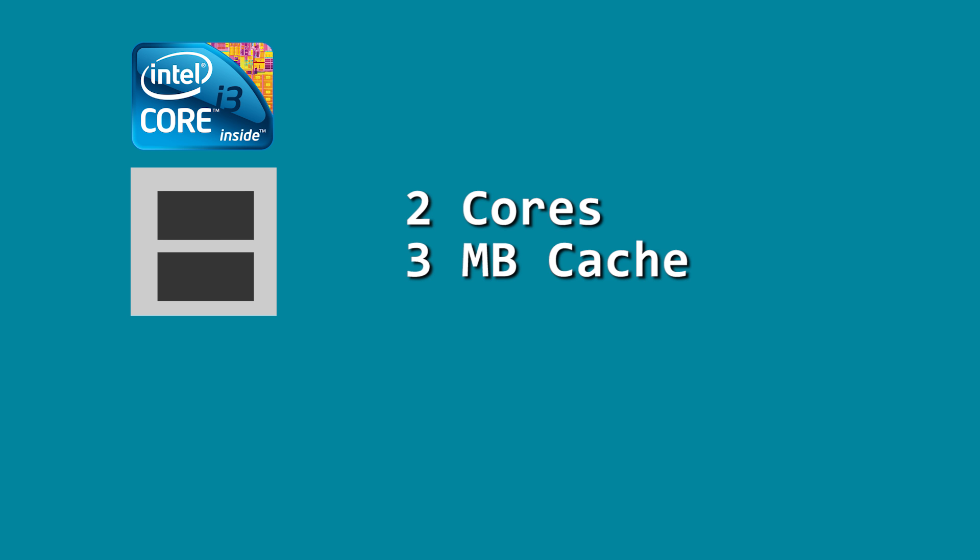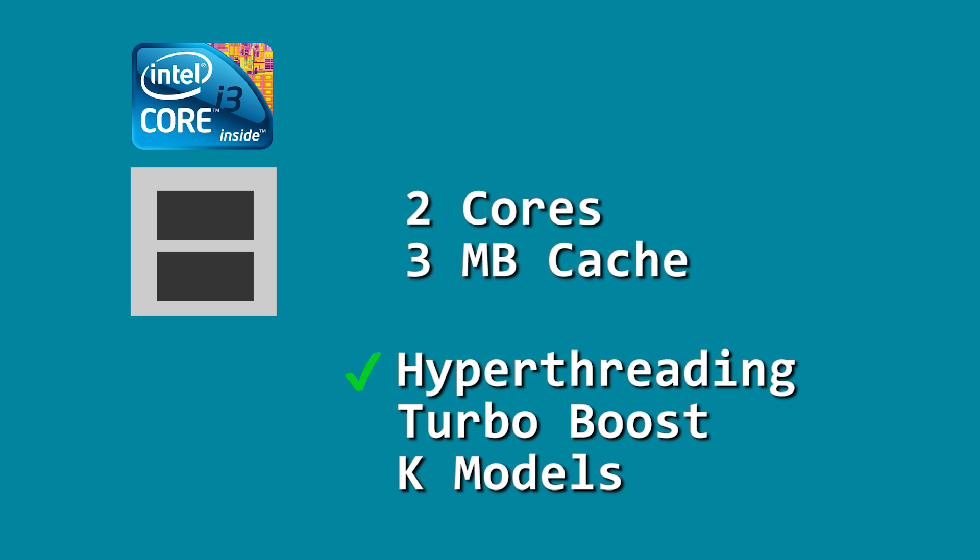Now let's talk about the branding names: Core i3, Core i5, Core i7. Starting with the Core i3 — it has two physical cores, three megabytes of cache memory, and it does support hyper-threading. It doesn't have Intel Turbo Boost technology and doesn't come with K models. Hyper-threading means your operating system shows double the actual physical core count — so a Core i3 with two cores will act like a four-core CPU under heavy load, though it's not as powerful as a real four-core CPU like the Core i5.